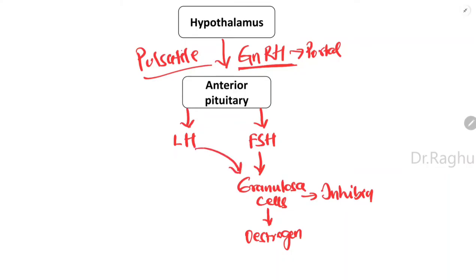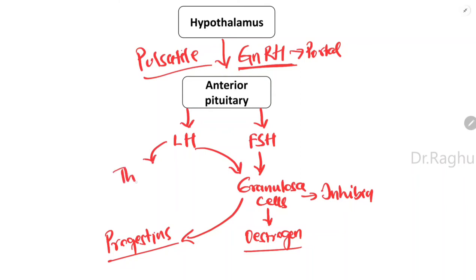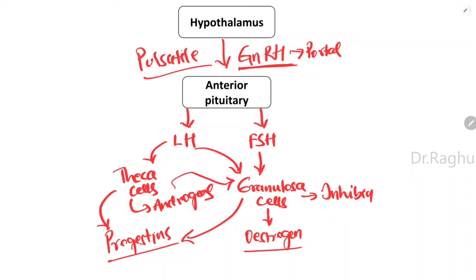LH also acts on granulosa cells, causing them to produce progesterone (also called progestins). LH additionally acts on theca cells in the ovary, which produce progesterone and androgens. These androgens enter the granulosa cells where, under the influence of FSH and the enzyme aromatase, they are converted back to estrogen.